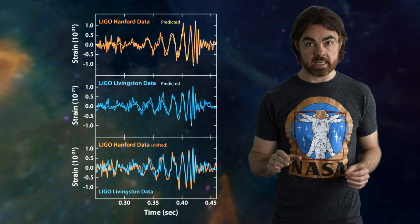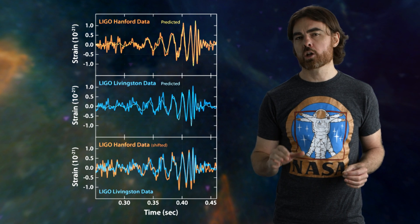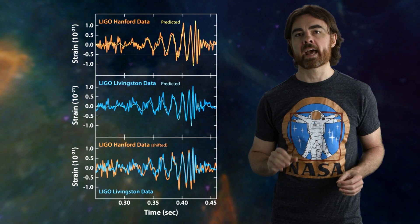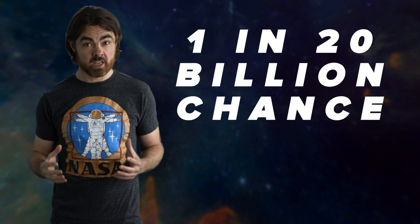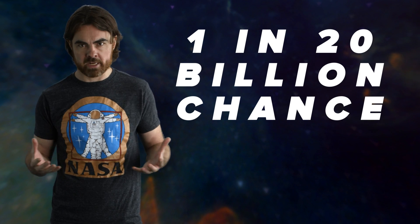Also, the same signal was seen in the two LIGO detectors located in Livingston, Louisiana and Hanford, Washington. It's calculated that LIGO would need to observe for over 200,000 years to see the same signal arise from random vibrations. Or another way to put this is that there's a 1 in 20 billion chance that this signal was from random vibrations.